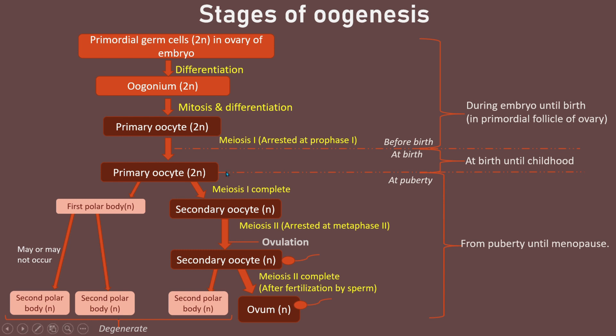If we compare spermatogenesis and oogenesis: in spermatogenesis, sperm are produced until a man dies, because there is always a renewable stock of spermatogonia in the seminiferous tubules of the testes. But in oogenesis, the stock of primary oocytes is limited. Once all the primary oocytes are used and finished, the production of eggs will stop.